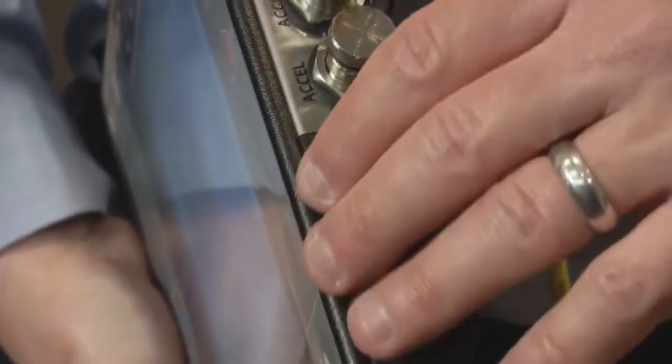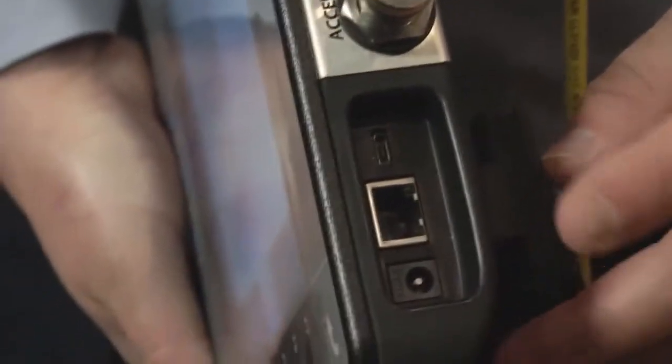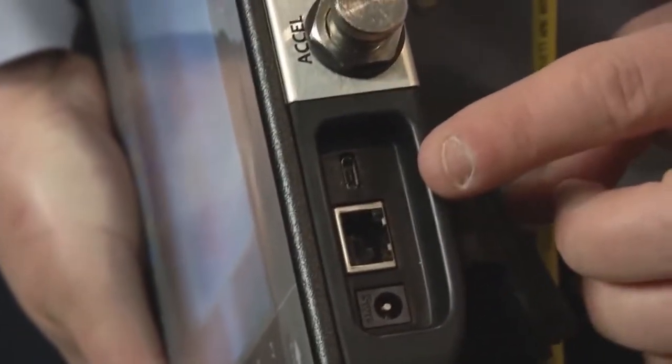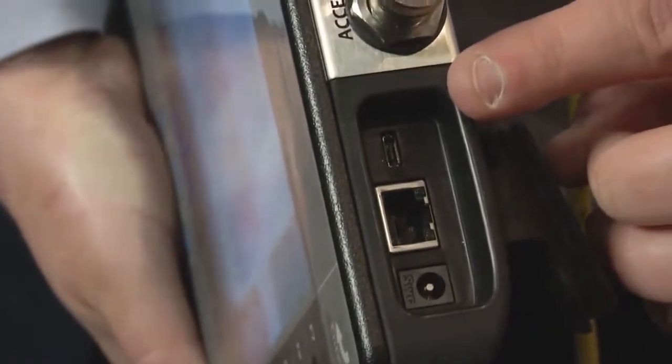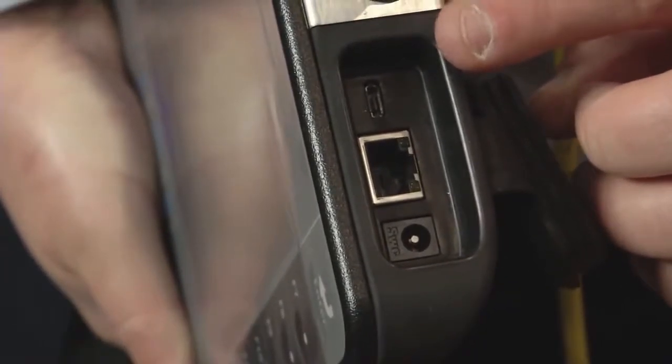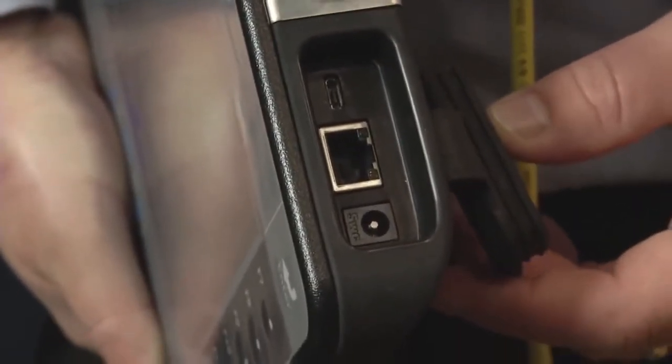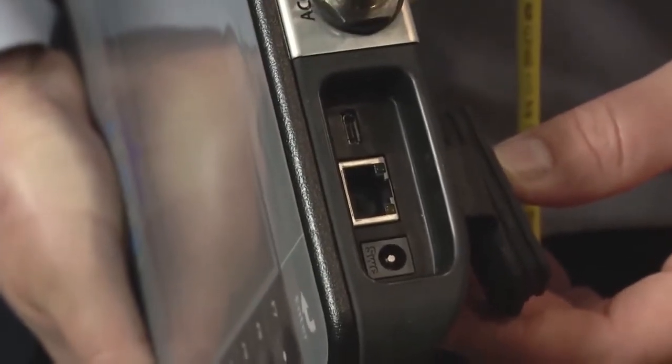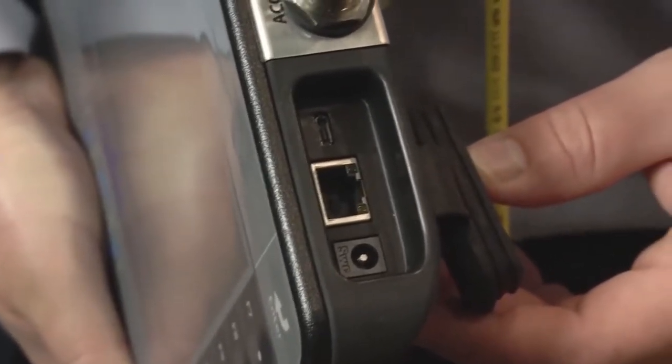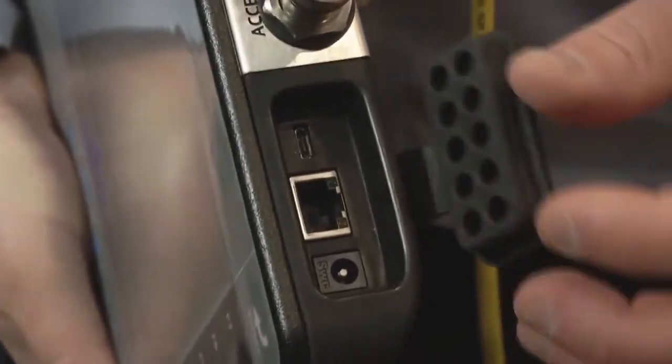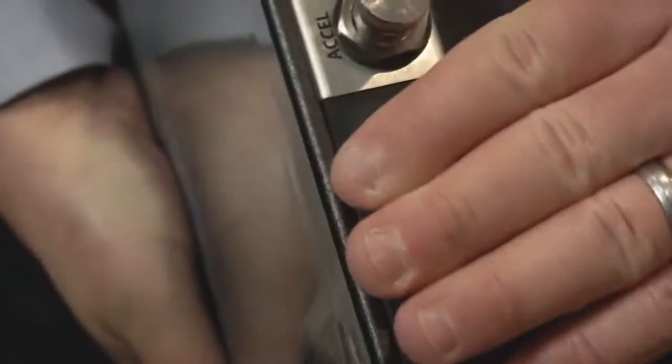Now all of the connections to the CSI 2140 are on the top of the instrument as you can see here. Power, wired Ethernet communications and USB 2.0 communications for communicating, uploading and downloading routes and data with the AMS Machinery Manager software and all of this is sealed up with this rubber plug to make an IP 65 sealed connection.